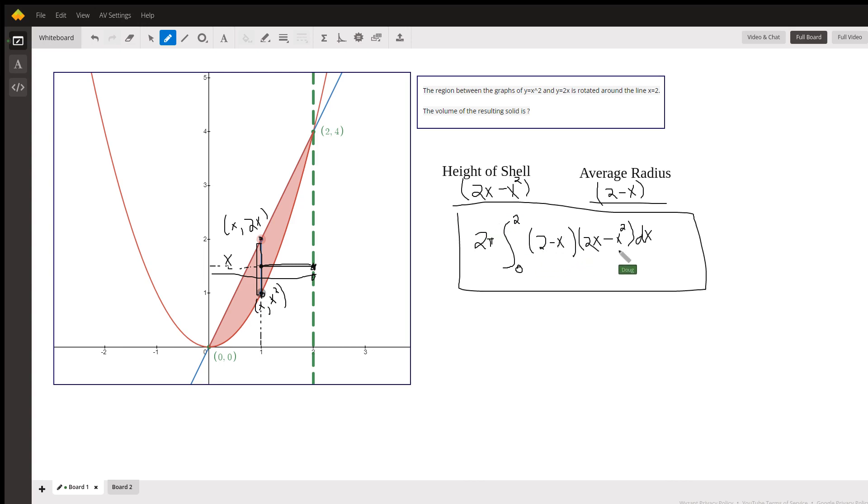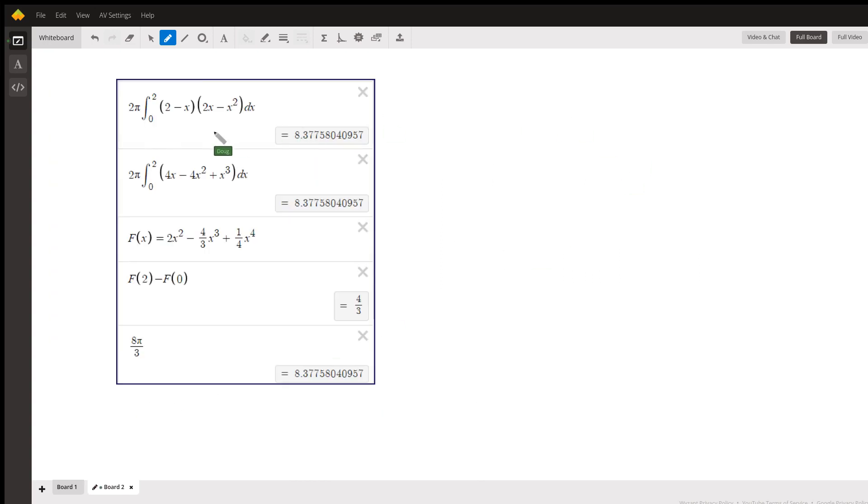To evaluate, of course you would use FOIL to multiply these two binomials. Maybe put this 2 in there, but here's what it looks like. There's the original. There's after multiplying the two binomials together. Here's the antiderivative of the integrand.